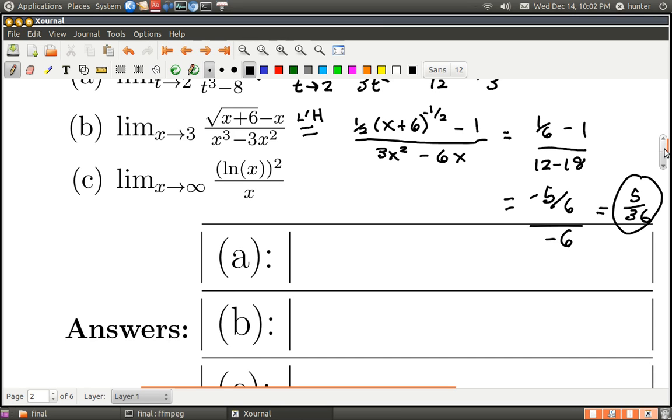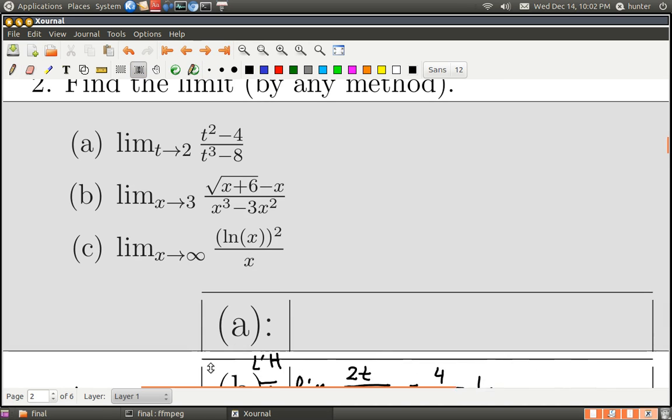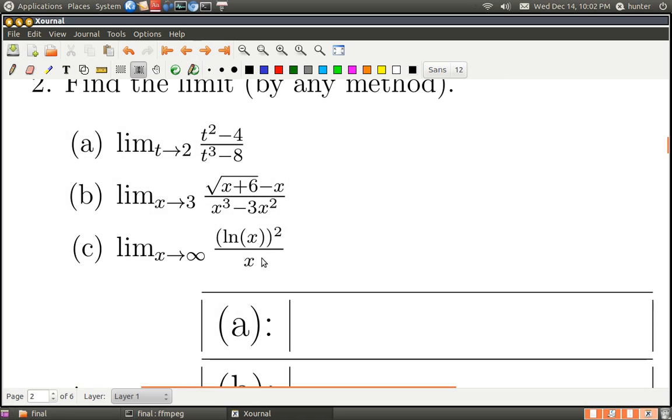Now, part c, actually, it might not be just one step, possibly a multi-step problem here, but it's also L'Hopital's rule. Now, it's a limit of a different form. Instead of zero over zero, this is a limit of the form infinity over infinity. Still indeterminate, still something that you can use L'Hopital's rule for. So for part c, let's use L'Hopital's rule.